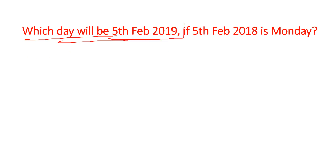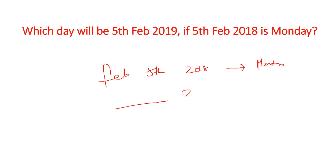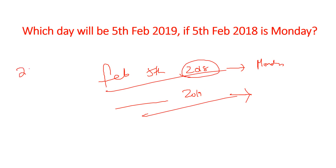Which day will be 5th February 2019 if 5th February 2018 is Monday? So what day does February 5th 2019 become? The simple thing here is we need to check whether 2018 is a leap year. 2018 is not a leap year — the last two digits are not divisible by 4, so it is not a leap year. So if February 5th 2018 is Monday, then February 5th of the next year becomes Tuesday.